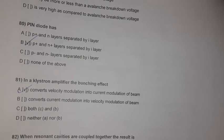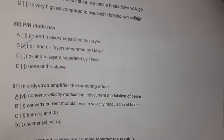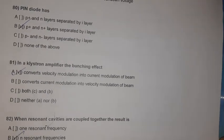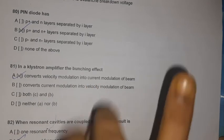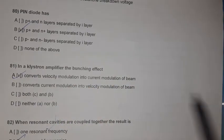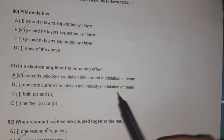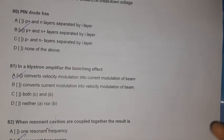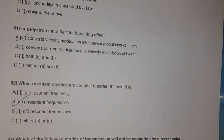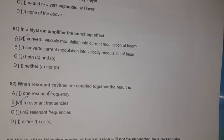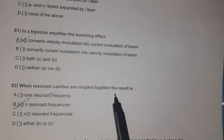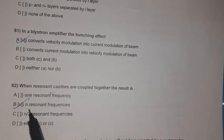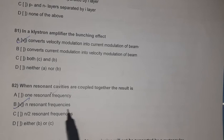Question 79: In a klystron amplifier, the bunching effect converts velocity modulation into current modulation of the beam. Question 80: When resonant cavities are coupled together, the result is n resonant frequencies.